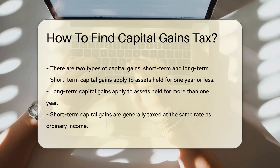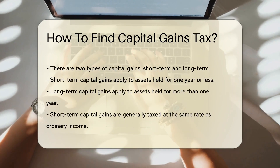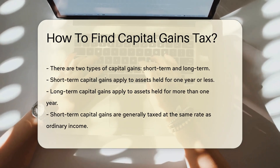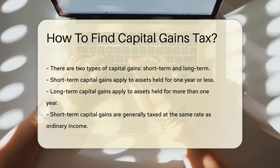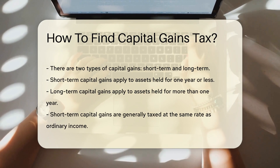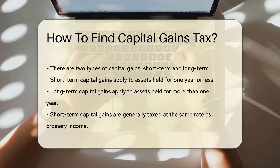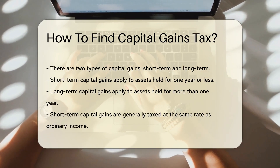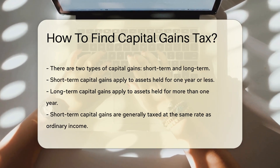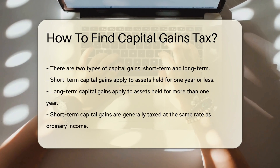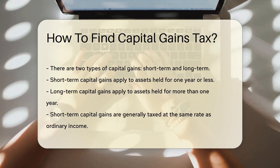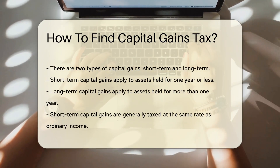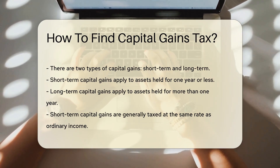There are two types of capital gains: short-term and long-term. Short-term capital gains apply to assets held for one year or less. Long-term capital gains apply to assets held for more than one year.